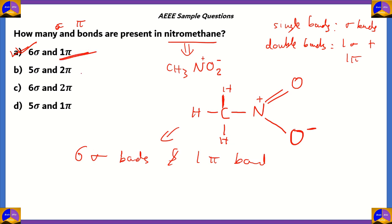For five sigma and two pi, that means there would be two double bonds, which is not correct. Option C also says two pi, that means we would have had to have a triple bond or two double bonds, which is not present. In option D, the number of sigma bonds don't add up because one of the bonds is not being calculated properly. So option D is incorrect. The correct answer for this question is option A, six sigma and one pi, and that's due to this particular structure of nitromethane, which is CH3N+O2-.